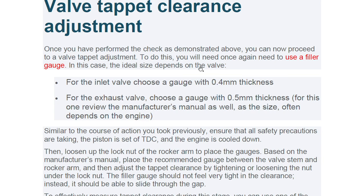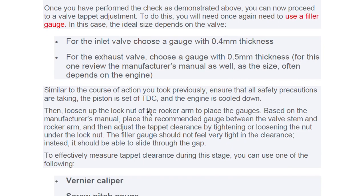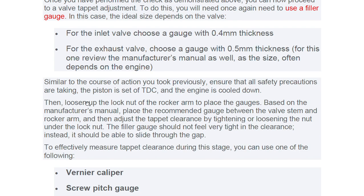For tappet clearance adjustment, once you have performed the check, proceed to valve tappet adjustment using a filler gauge. The ideal size depends on the valve type: for the inlet valve choose a gauge with 0.4 mm thickness; for the exhaust valve choose 0.5 mm thickness — generally exhaust clearance is more than inlet. Ensure all safety precautions are taken, the piston is at TDC, and the engine is cooled. Then loosen the lock nut of the rocker arm, place the recommended gauge between the valve stem and the rocker arm, and adjust tappet clearance by tightening or loosening the nut under the lock nut. The filler gauge should not feel very tight — it should be able to slide through the gap.